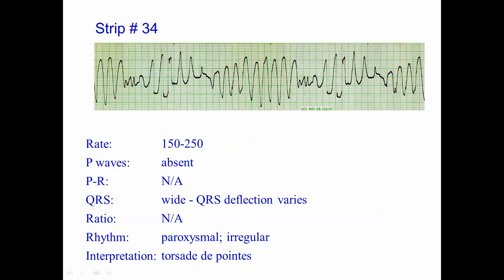There are two broad categories of prolonged QT, which is the leading cause of torsade. One is congenital prolonged QT and the other is acquired prolonged QT. If you see torsade in a young person, it's most likely congenital. If you see it in someone who's older, most likely acquired.